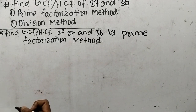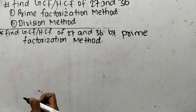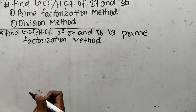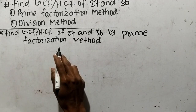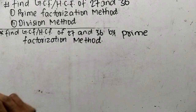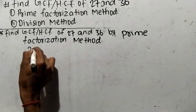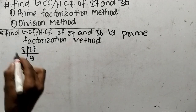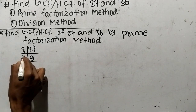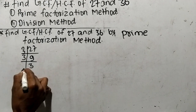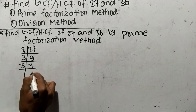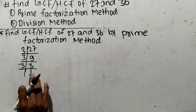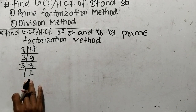While finding out GCF or HCF by prime factorization method, first we have to find out the prime factors of the given numbers. So we have the numbers 27 and 36. Let's find out the prime factors of 27. It is 3 times 9 equals 27, like 3 times 3 equals 9, and 3 times 1 equals 3. So we have found out the prime factors of 27.